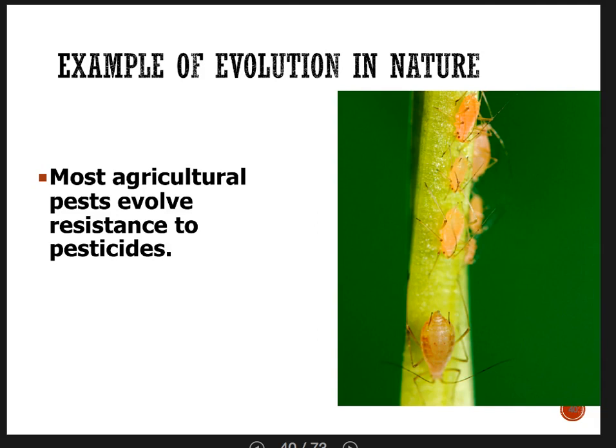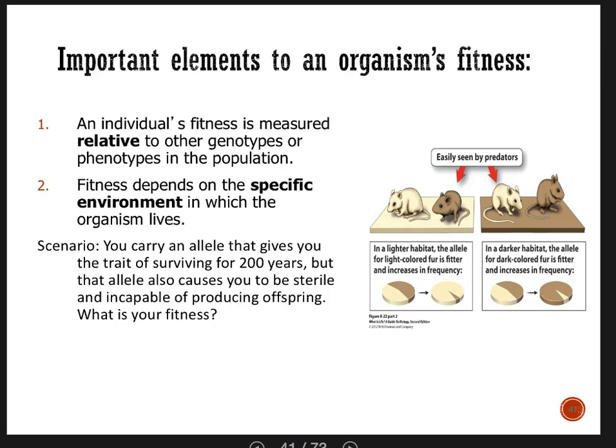Most agricultural pests have evolved resistance to pesticides — that's evolution, and it's happening all the time. If you think evolution doesn't happen, how do you explain to farmers why they're paying thousands of dollars for new pesticides only to find that in a few decades the pesticide doesn't work anymore? The insects aren't becoming immune the way your immune system works — it's a genetic thing, it's differential reproductive success, it's heritable, and there was variation in the population.